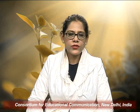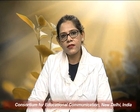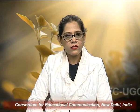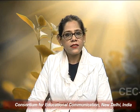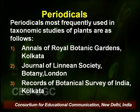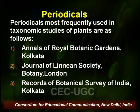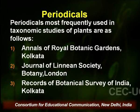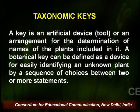Periodicals most frequently used in taxonomic studies include: the Annals of the Royal Botanic Garden, Kolkata; the Journal of the Linnean Society, Botany, London; and the Records of the Botanical Survey of India, Kolkata.